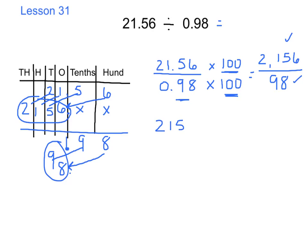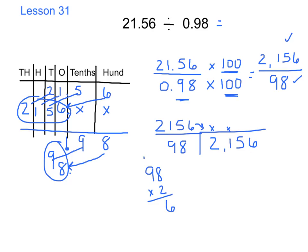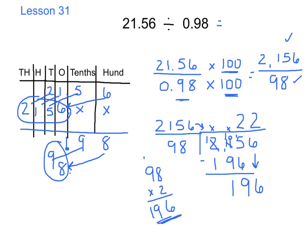Now we're going to divide 2,156 by 98. Remember, the numerator dives into the swimming pool. Can 98 go into 2? No. Can 98 go into 21? No. 98 can go into 215 — 98 times 2 is 196. Subtracting: 215 minus 196 gives us 19. Bring down the 6 to get 196. We notice 98 goes into 196 evenly: 98 times 2 equals 196, and 196 minus 196 equals 0. So our answer for 21 and 56 hundredths divided by 98 hundredths is 22.